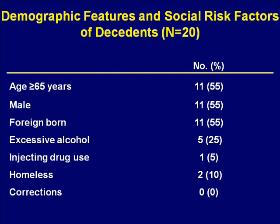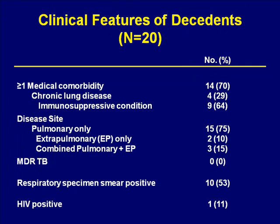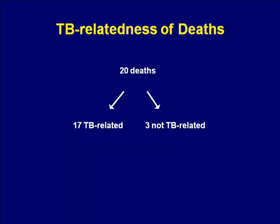Of the 20 decedents, 14 died during treatment, one died after diagnosis but before starting treatment, and five were diagnosed with TB after death. A little more than half were 65 years of age and older, male, and foreign-born. Excessive alcohol use in the previous year was the most common social risk factor among this group. Fourteen or 70% of decedents had at least one medical comorbidity, and three-quarters had pulmonary TB only. Importantly, no patients had MDR-TB, and only one patient was HIV positive. Of the 20 deaths, 17 were determined to be TB-related and three were not TB-related.